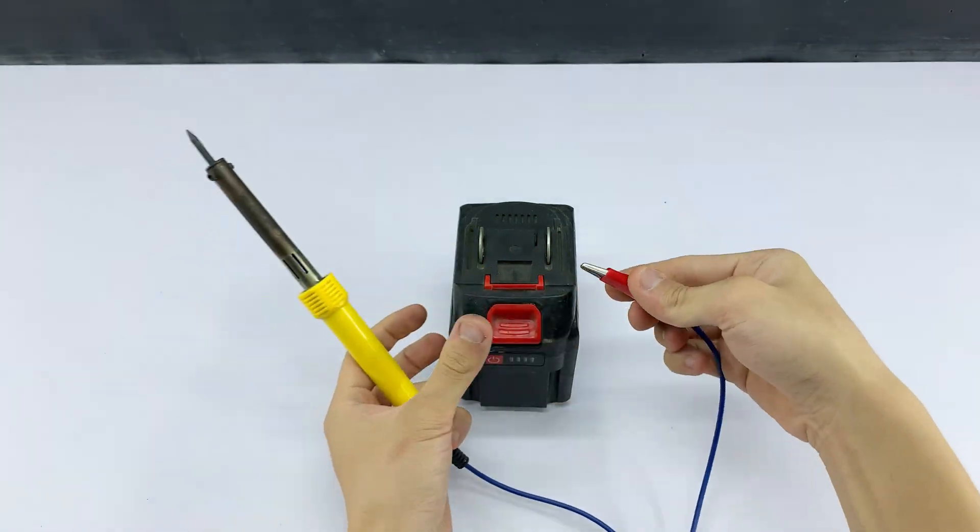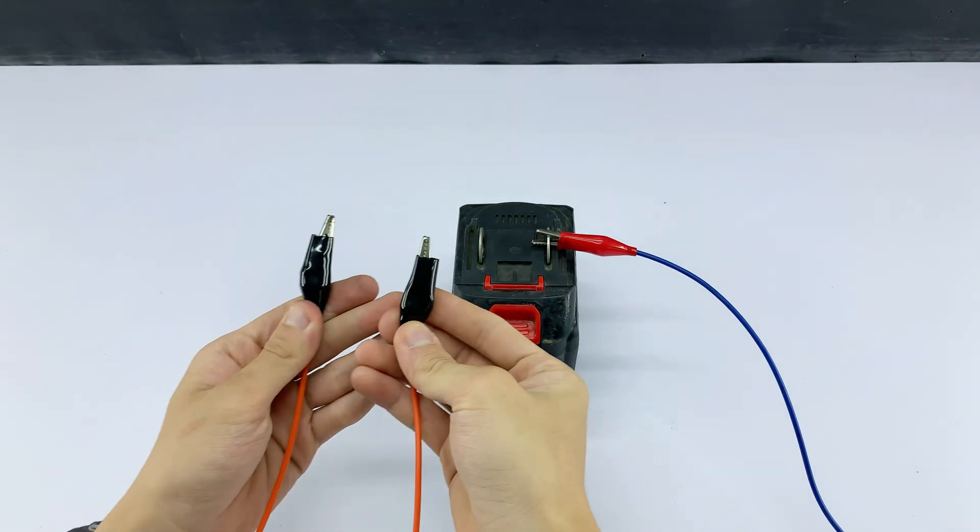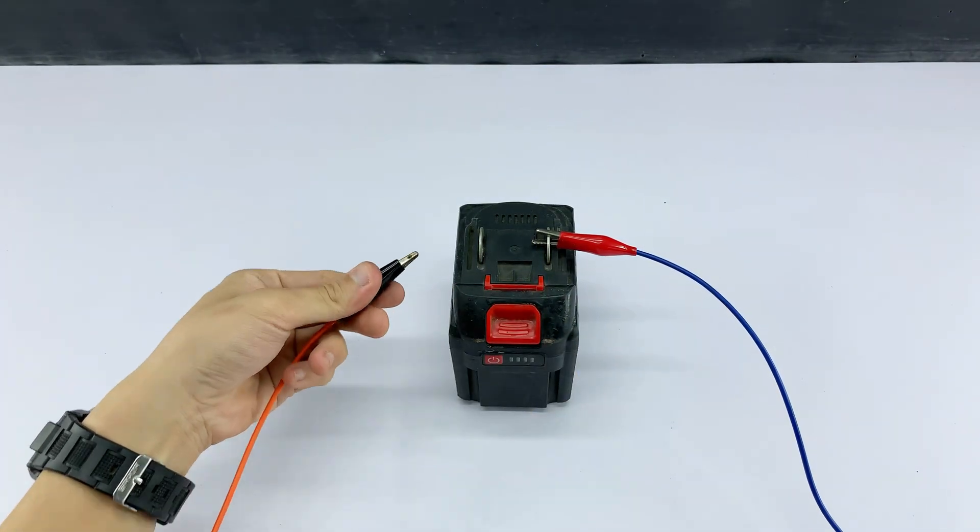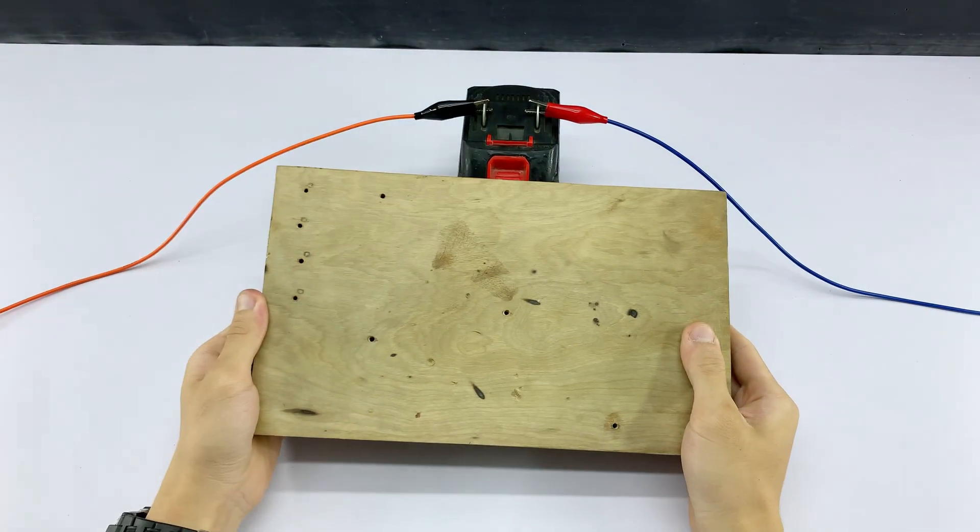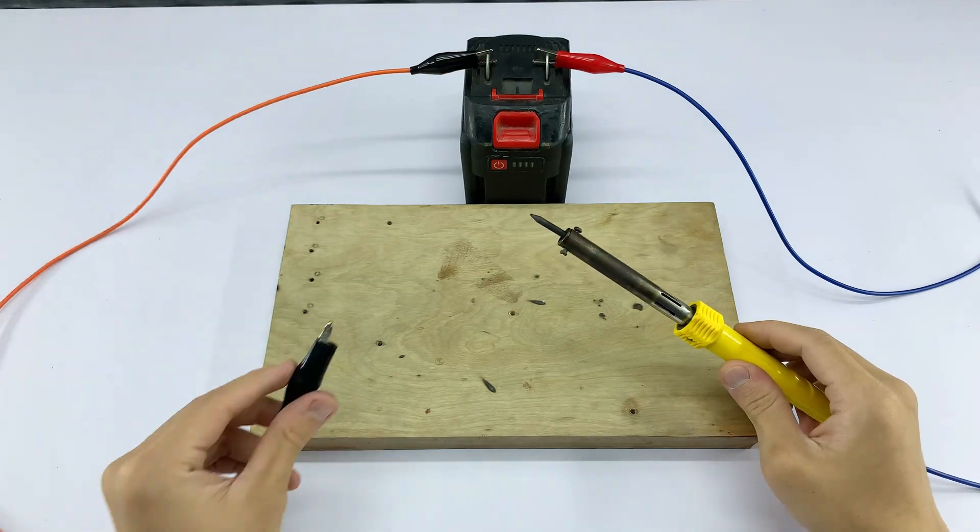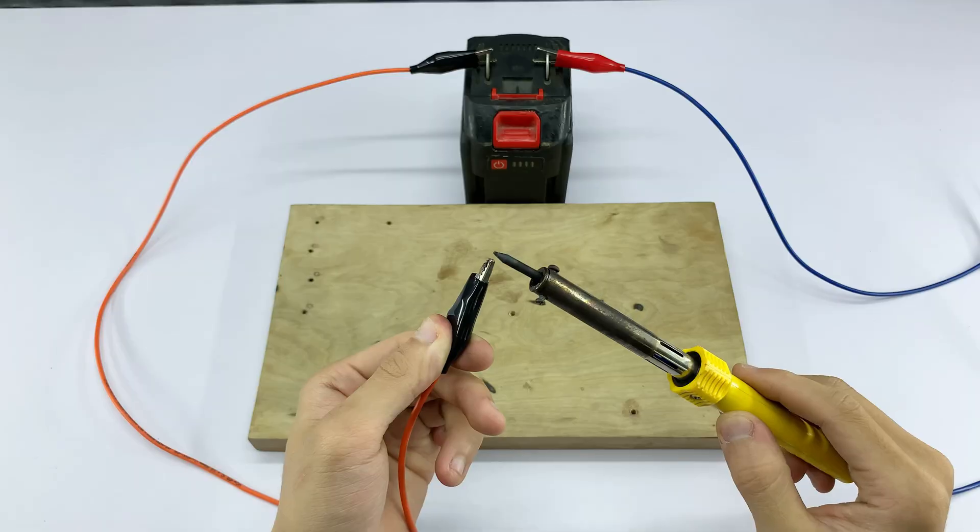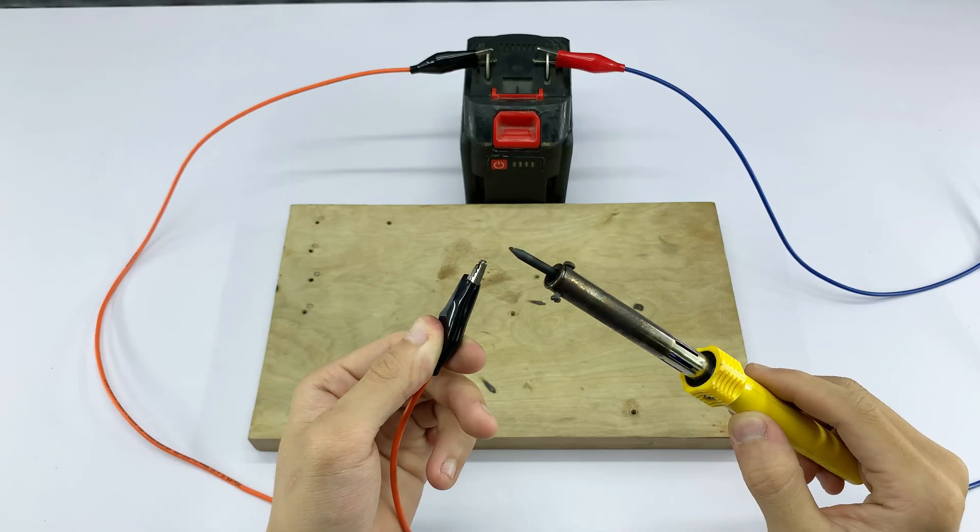I'm connecting my DIY soldering iron directly to the Makita battery pack using the orange and blue alligator clip wires. Watch this! I'll touch the tip to this metal piece, and it instantly heats up glowing red.